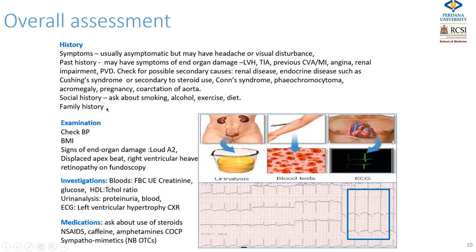Check for a family history of hypertension, stroke, other vascular events, heart failure, or renal impairment. Check the blood pressure in the manner described. Calculate the BMI. Look for evidence clinically of end organ damage — in the heart you may have a loud aortic second sound, a displaced apex beat, or a right ventricular heave. On fundoscopy you might find evidence of hypertensive retinopathy. Baseline investigations should include full blood count, urea and creatinine, random or fasting glucose, and lipid profile.